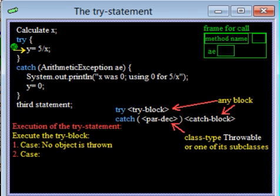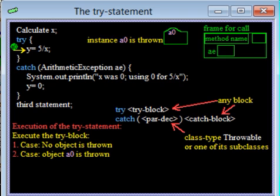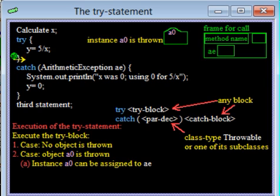If an object is thrown, let's say some object A0, the TRY block is abnormally terminated. What happens next depends on the catch clause that follows the TRY block. If the class of the catch clause parameter matches the class of instance A0, the catch block catches the thrown A0.